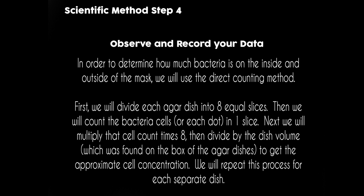Scientific Method Step 4: Observe and record your data. In order to determine how much bacteria is on the inside and outside of the mask, we will use the direct counting method. First, we will divide each agar dish into 8 equal slices. Then we will count the bacteria cells, or each dot, in one slice. Next, we will multiply that cell count times 8, then divide by the dish volume to get the approximate cell concentration. We will repeat this process for each separate dish.